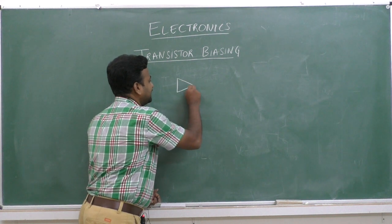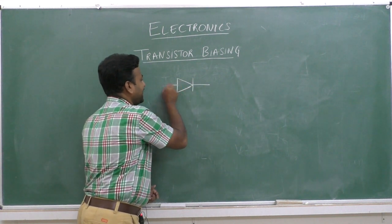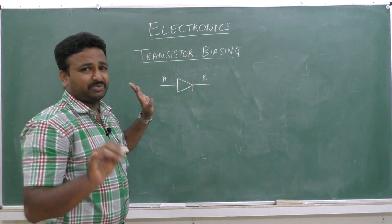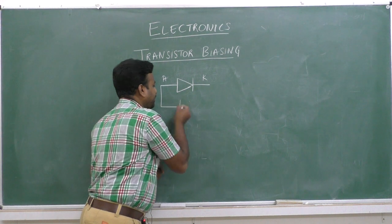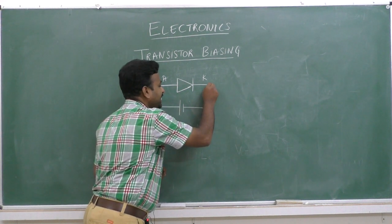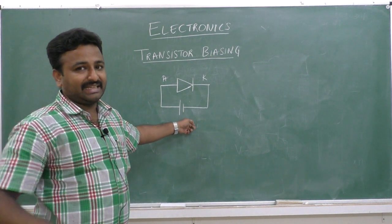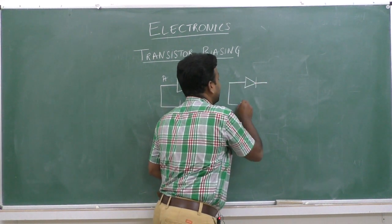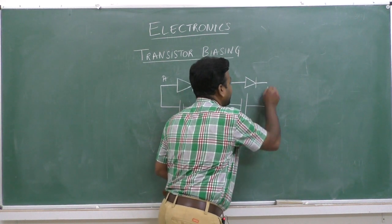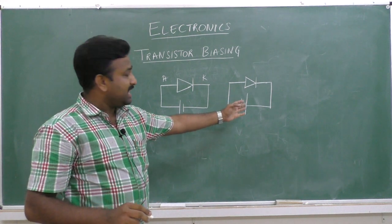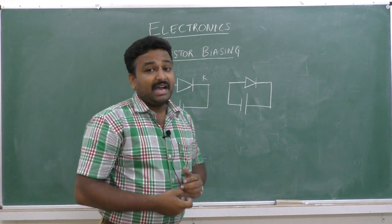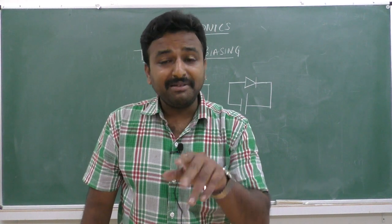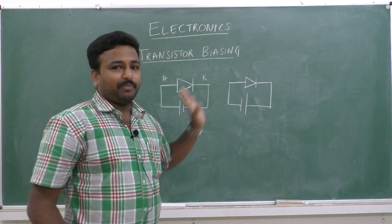In forward biasing of a diode, the anode is connected to the positive terminal and the cathode to the negative terminal of the battery. There were only two possible combinations. But a transistor has three terminals, so there are more possibilities of connection.